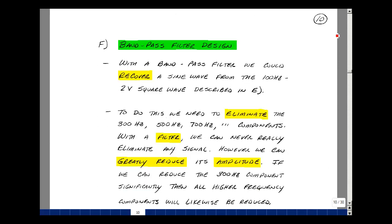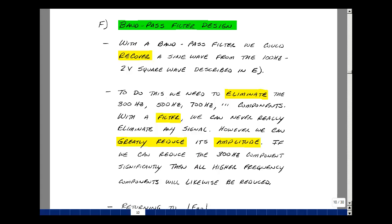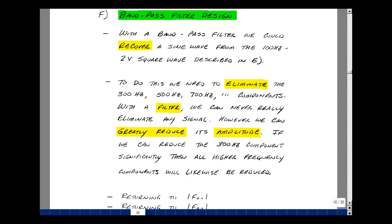So in our design, what we like to do is to recover a sine wave from a square wave, this particular 2 volt square wave. And to do this, we need to eliminate the 300, 500, 700, 900 hertz sinusoidal components that are in our square wave. Now a filter can't really eliminate a particular signal, but it can make it a lot smaller. So let's use an idea of attenuation to get rid of these terms that we just have the fundamental frequency at 100 hertz.